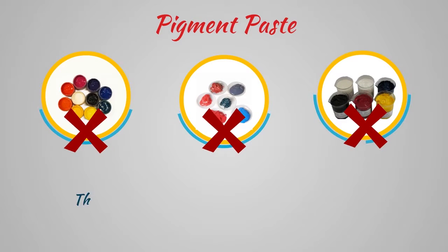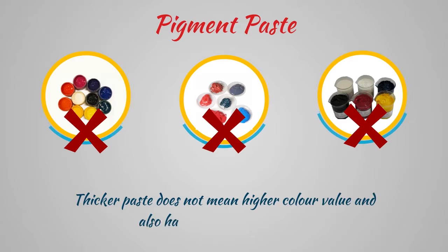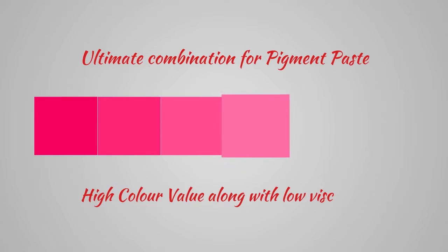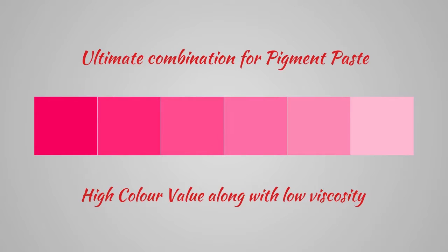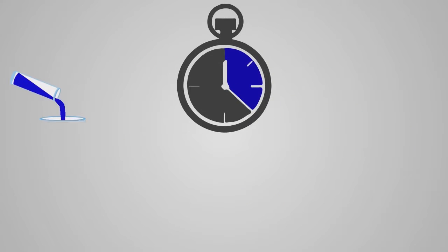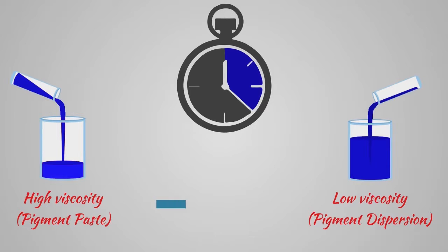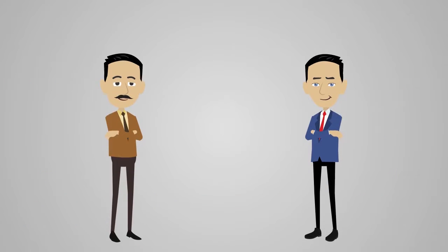...is that a thicker paste does not mean higher color value and also has various disadvantages. High color value along with low viscosity is the ultimate combination for technologically advanced pigment paste — that is, pigment dispersion.